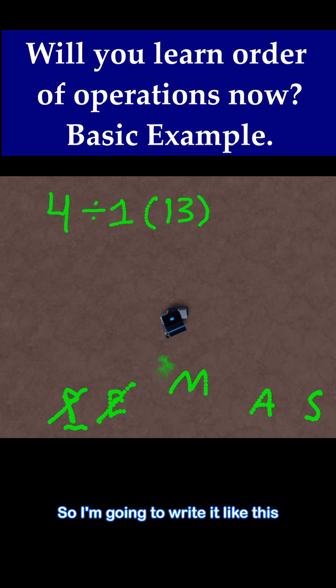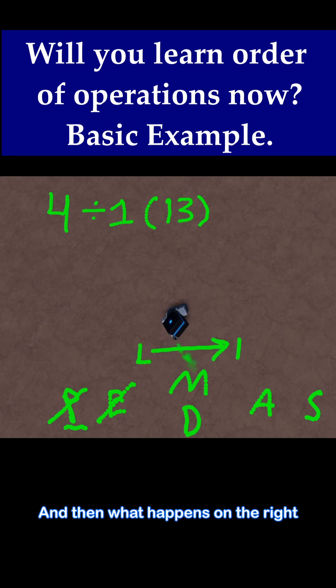So I'm going to write it like this, M and D. So how do we know which one comes first, multiplication or division? Well, the rule is you go from left to right and whatever is on the left happens first. And then what happens on the right happens next when you have multiplication and division at the same time.